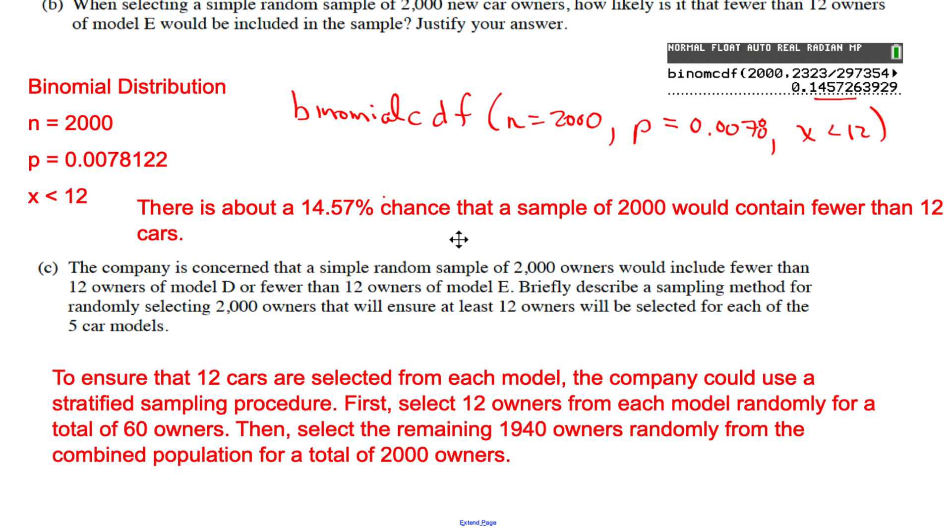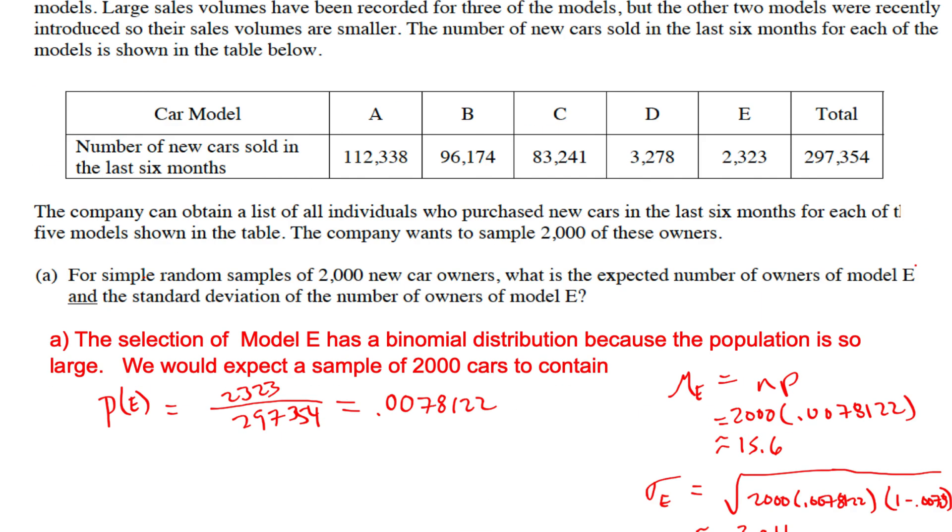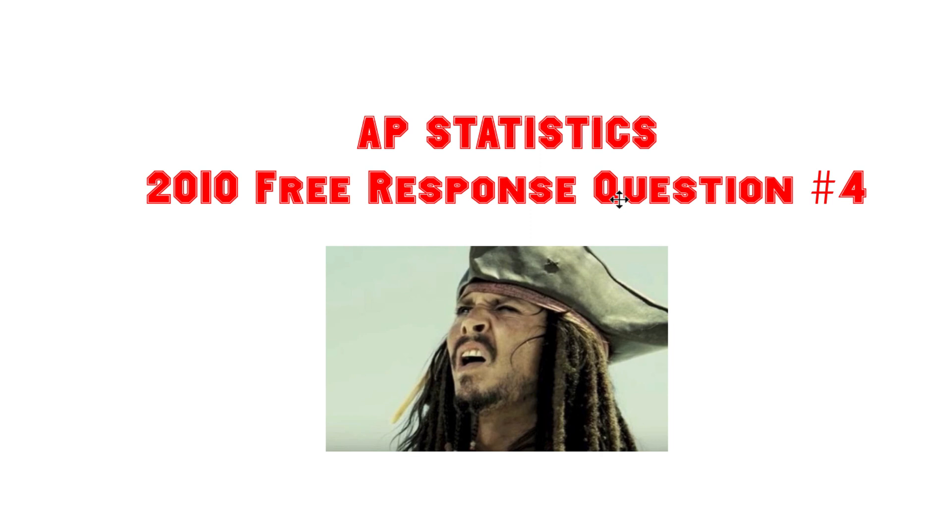According to the answer key, the way they grade it is you need 2,000, you need 12 from each, and it needs to be randomly selected. There's some leeway there, so I think I'm good and I would get it. That's basically it. That is number four from 2010. Good luck out there with your AP Stats FRQs.